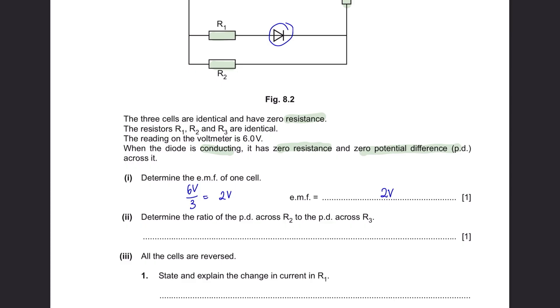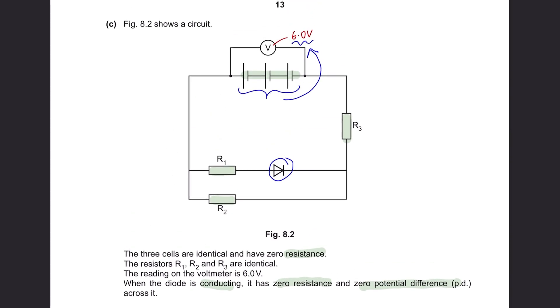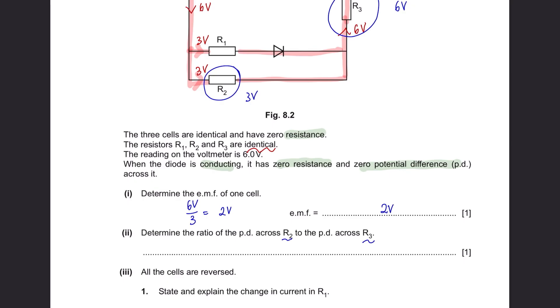Part 2: Determine the ratio of the potential difference across R2 to the potential difference across R3. We need to find the voltage of resistance 1, 2, and 3 in order to solve this question. We know that the voltage being supplied is 6 volts. So there will be 6 volts being supplied all the way here until it reaches the parallel circuit. It will split into 3 volts each. It will be equally spread because all the resistors are identical, so 3 volts here and 3 volts here. And the total voltage going back to R3 would be 6 volts. So we know that R3 has 6 volts and R2 has 3 volts. So R2 to R3 is 3 volts to 6 volts, which in ratio can be written as 1 to 2.